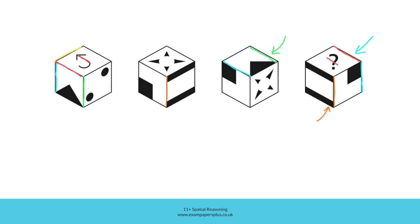Here is another shared edge we can consider — this is the shared edge between this figure and this one. That means that the same shared edge in the final view is here. As you can see, the arrowhead is closest to that shared edge, so the arrowhead in the figure we're looking for will be in this orientation. The curved section of the figure is closest to the shared edge between this figure and this one, and that means the curve will be positioned like this.